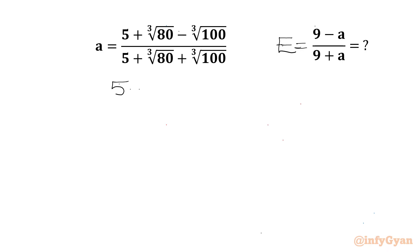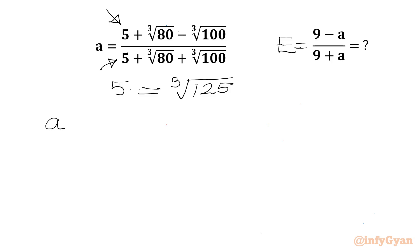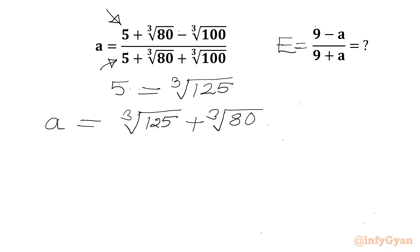Now we know that 5 is equal to cube root of 125. So I will replace our numerator 5 and denominator 5 by cube root of 125. So I will write a will be equal to cube root of 125 plus cube root of 80 minus cube root of 100.